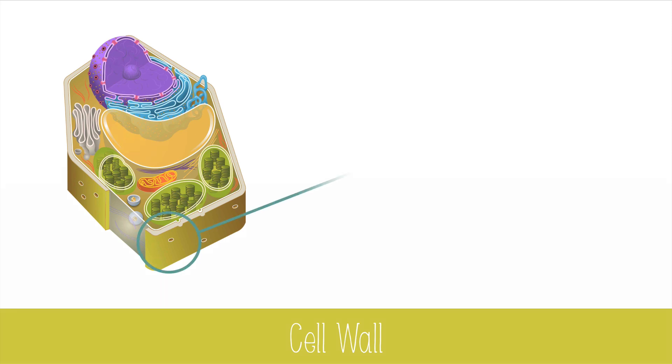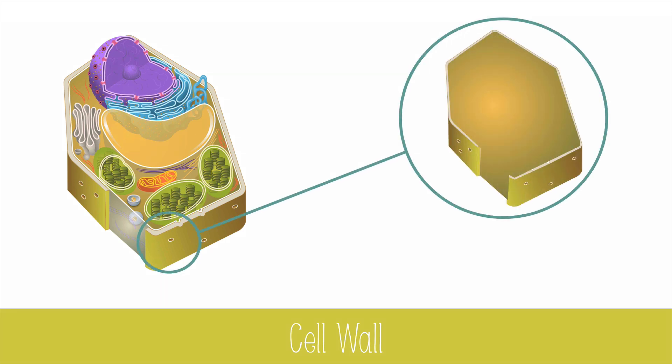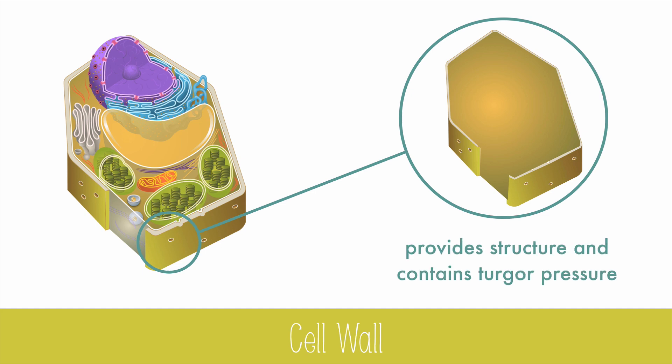The cell wall surrounds the cell membrane and is made mostly of a carbohydrate called cellulose. It provides structure and contains the pressure of the vacuole pressing against it, which is called turgor pressure.